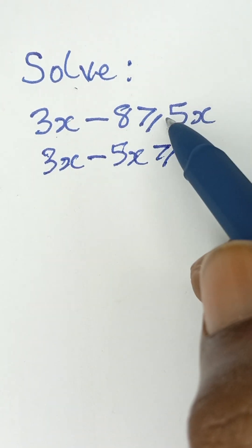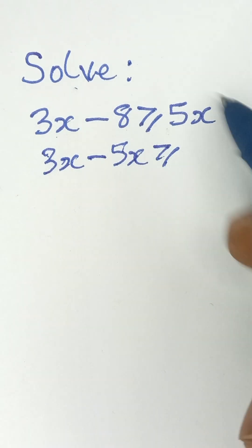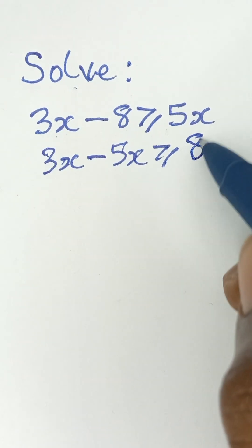Don't forget, when this positive 5x comes to this side, it becomes negative 5x. And when this negative 8 comes to this side, it becomes positive 8.